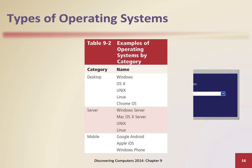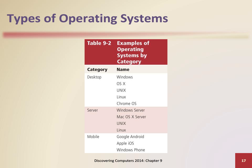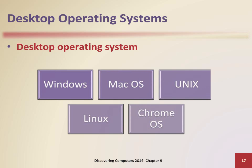There are three basic categories of operating systems: desktop, server, and mobile. A desktop operating system is a complete operating system that works on desktops, laptops, and some tablets.